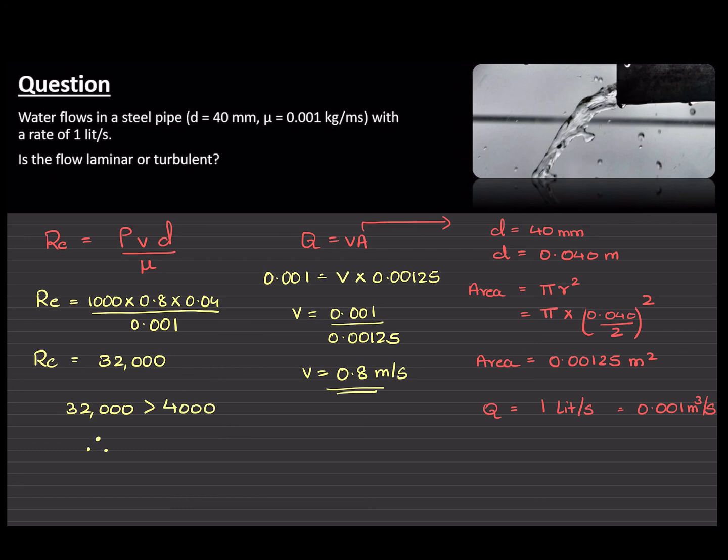Therefore, the flow in the pipe is turbulent flow. Okay, so if we get a Reynolds number of more than 4,000, the flow will be turbulent.